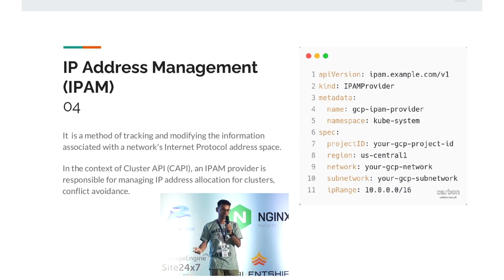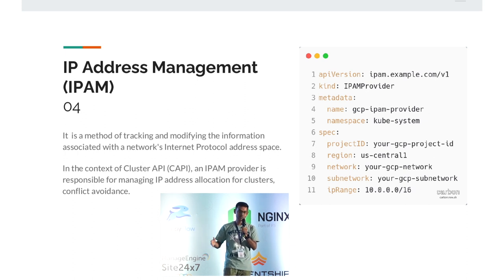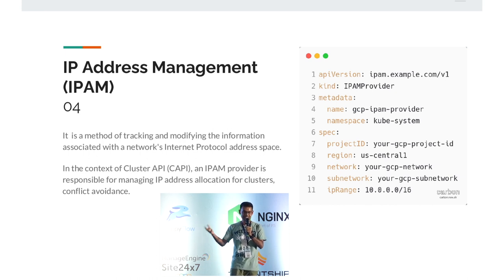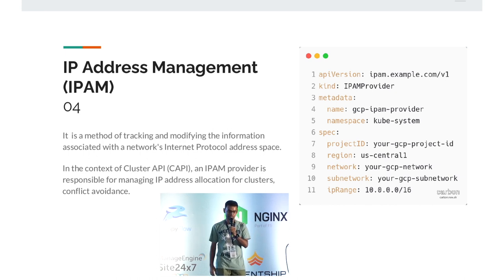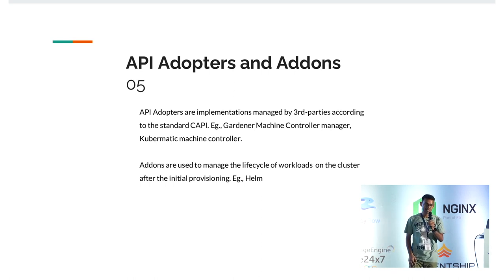IP Address Management: you have different pods, different cluster machines, and everyone needs an IP address, so you need another CRD or controller to manage IP addresses to avoid conflicts. Cluster API also has add-ons and adapters — for example, if you want Helm support in your Cluster API provider, you install the Helm CRD into your cluster and do all the scripting using Helm.